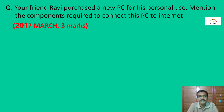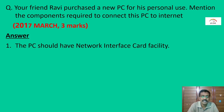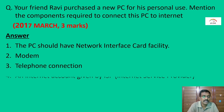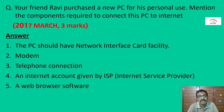Your friend David purchased a new PC for personal use. Mention the components required to connect this PC to the internet. The requirements are: a Network Interface Card (NIC), a modem, a telephone connection, an internet account given by an ISP, and web browser software.